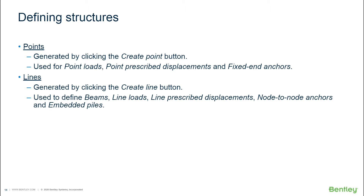First of all, we use geometric objects — for instance, points and lines. By defining a point or a line, you can then assign different features that can simulate the behavior that you want. When you create a point, you can do it by clicking the Create Point button, one of the options you will see in the side toolbar, and you will see that you have more options than just creating a geometric point.